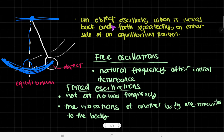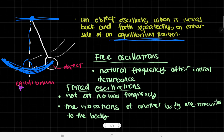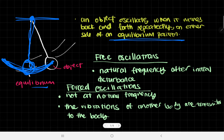An object oscillates when it moves back and forth repeatedly on either side of an equilibrium position. This equilibrium position is what I've put here - the place it would otherwise be before I displaced it. That is the equilibrium position. So that's all it takes for something to be oscillating.